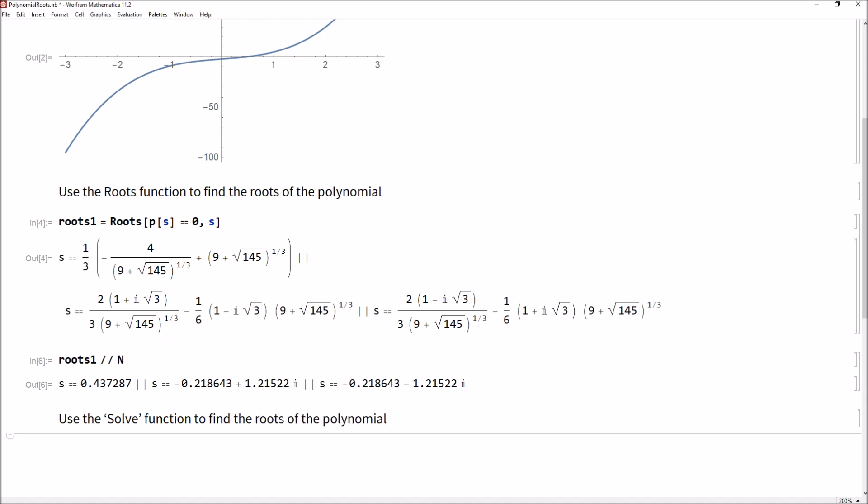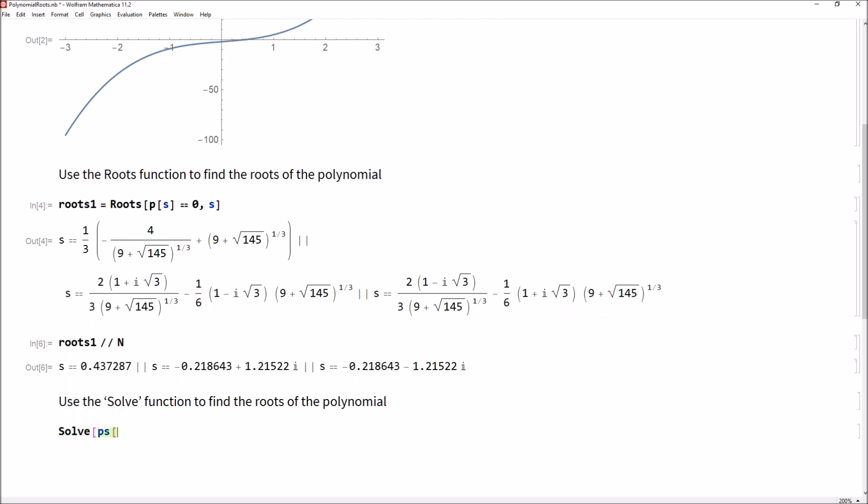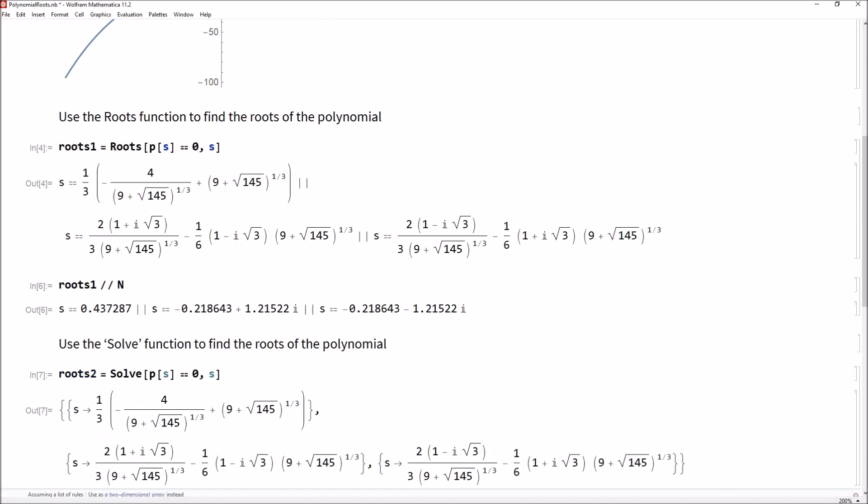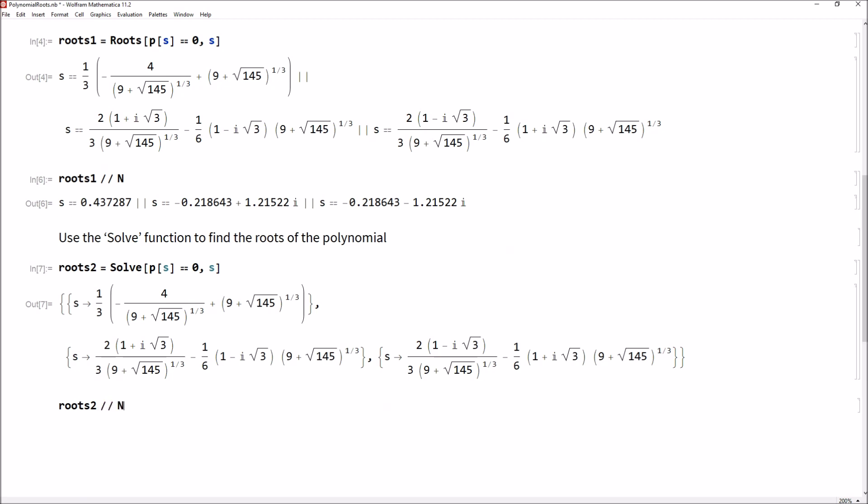The other way we can do this in Mathematica here is I could use the solve function to find the roots of the polynomial. So I could also say solve P(s) is equal to zero, solve it for s, and let's call that roots two as my second solution.